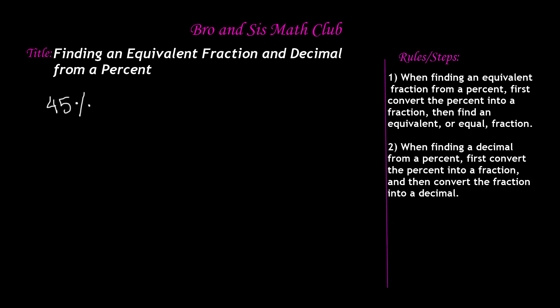So any number, if it's a percent, it's going to be out of 100. So 45% is really 45 out of 100. So this is the fraction for 45%, 45 over 100. The next step is find an equivalent or equal fraction.